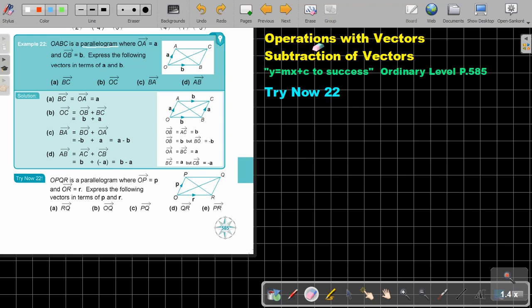We are going to continue with operations with vectors, and we are going to look at the second part of subtraction of vectors. You will find this on page 585 in the Namibia Ordinary Level Mathematics Textbook, Y equals MX plus C to success. Let's look at Try Now 22. OABC is a parallelogram where OA is A and OB is B. Express the following vectors in terms of A and B.